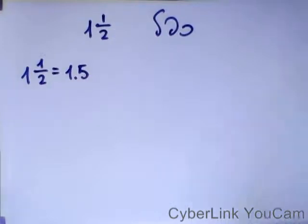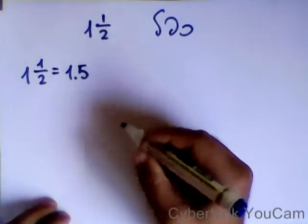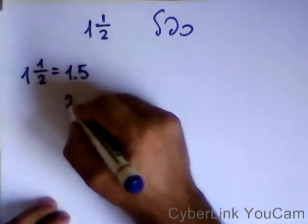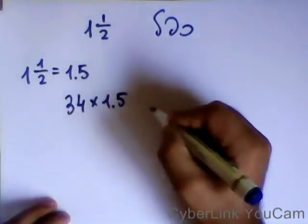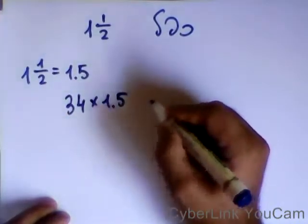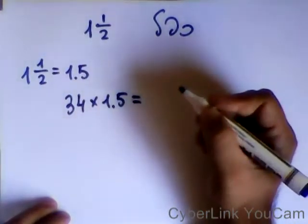Okay, here we are. אם אני רוצה להכפיל לאחת וחצי, למשל אני לוקח איזשהו מספר 34 כפול אחת וחצי. 34 כפול וחצי, מה צריך לעשות?